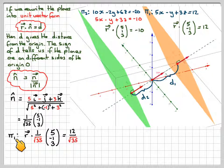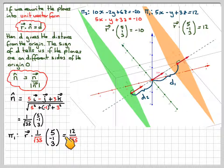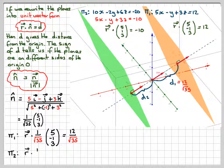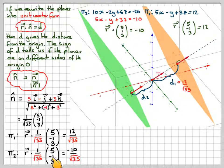In unit vector form, the first plane becomes r·(1/√35)(5, −1, 3) = 12/√35, so the distance from the origin to plane 1 is 12/√35. For the second plane, it becomes r·(1/√35)(5, −1, 3) = −10/√35, so the distance is −10/√35.